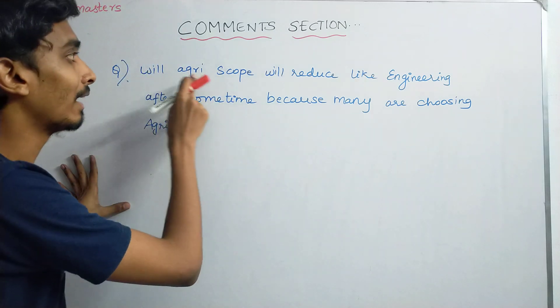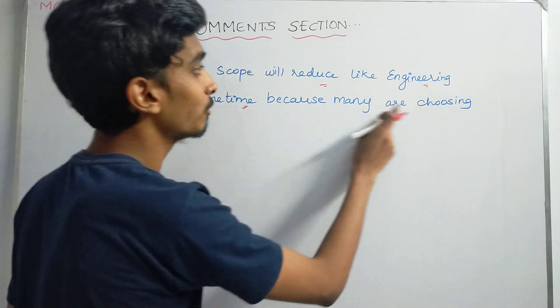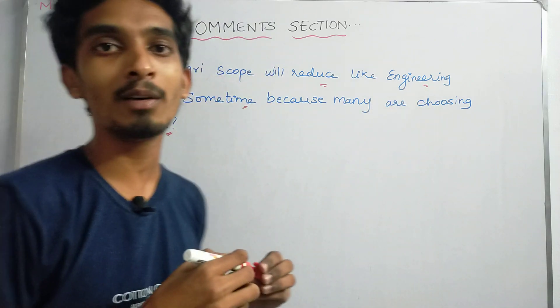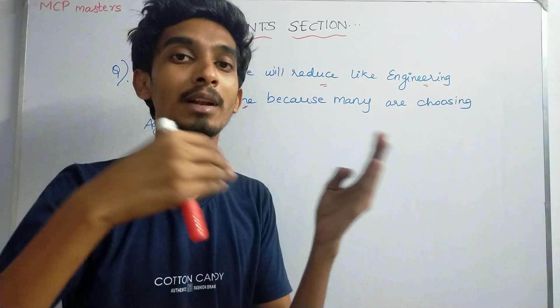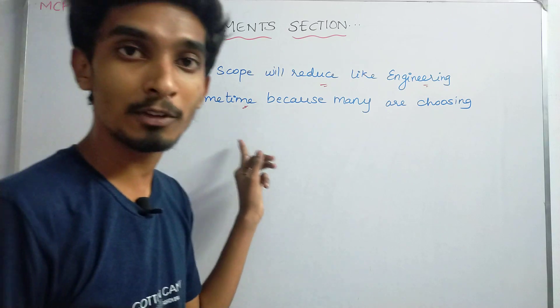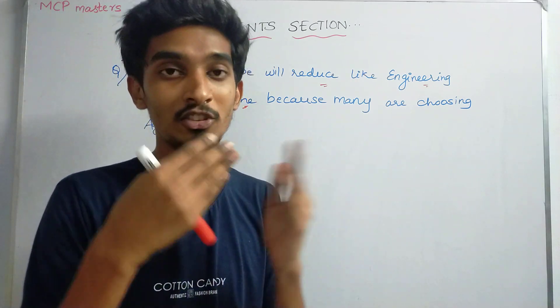One question asks: Will agriculture scope reduce like engineering after some time because many are choosing agriculture? Many people studied engineering so there's no scope there. Similarly, many people are choosing B.Sc Agriculture, so is there no scope? Actually, both agriculture and engineering have scope, but you need to be a skilled person.